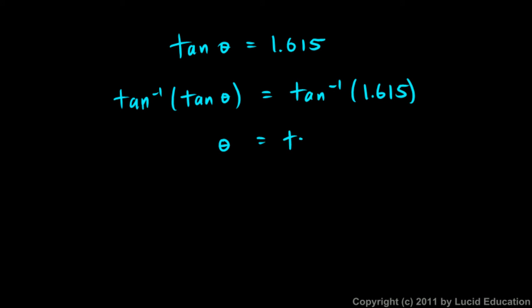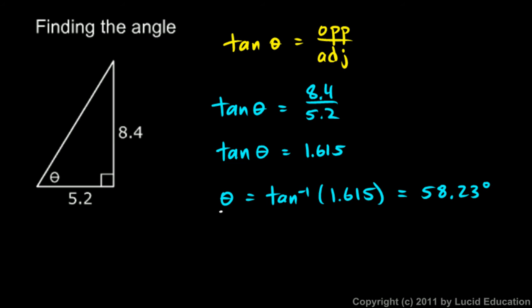So if you have something like this and you can't remember how to solve for theta, you can think of this as doing an inverse tangent on each side, and that gets us to here: theta is the inverse tangent of 1.615, and that we do on the calculator.